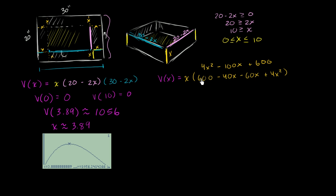So this part simplifies, and I can change the order to 4x squared minus 100x plus 600. So I can rewrite the volume as a function of x as being equal to x times all of this business, which is equal to 4x to the third power minus 100x squared plus 600x.